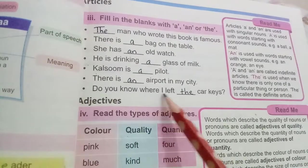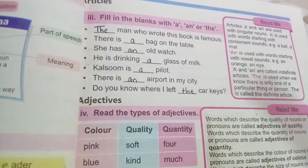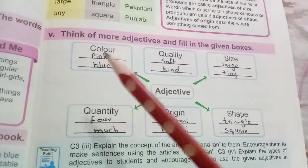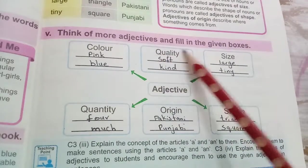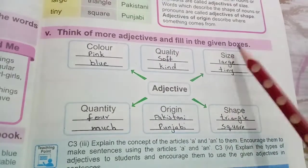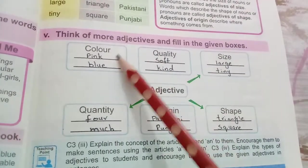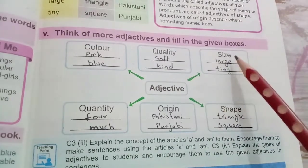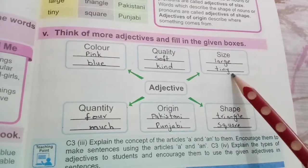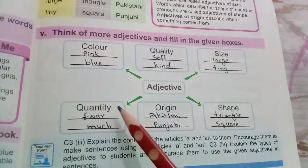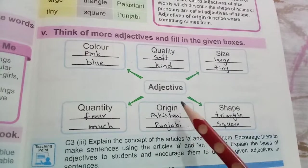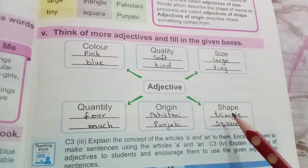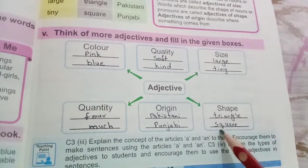More adjectives — fill in the given boxes. Adjective of color: pink, blue. Adjective of quality: soft, kind. Adjective of size: large, tiny. Adjective of quantity: few, much. Adjective of origin: Pakistani, Punjabi. Adjective of shape: triangle, square.